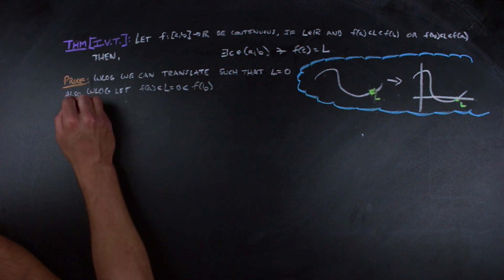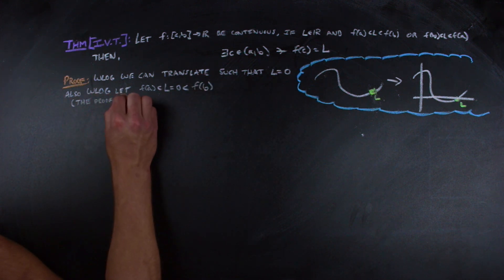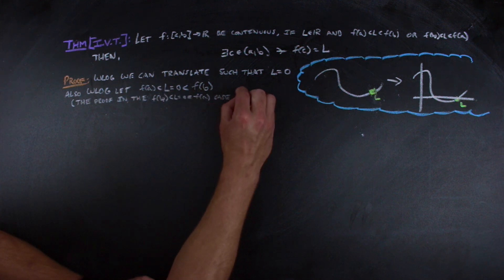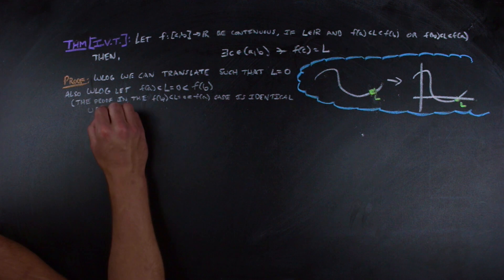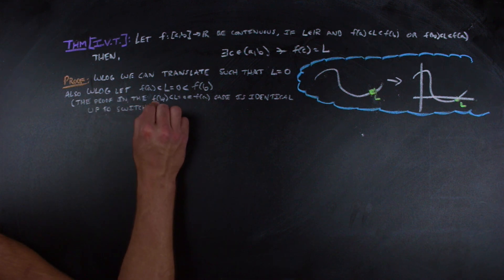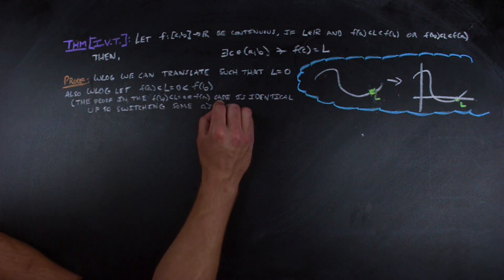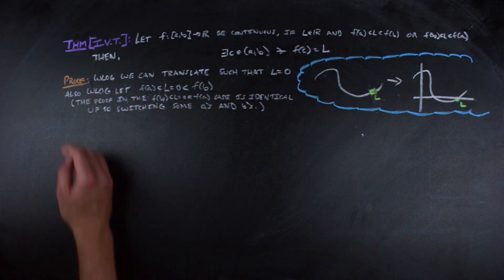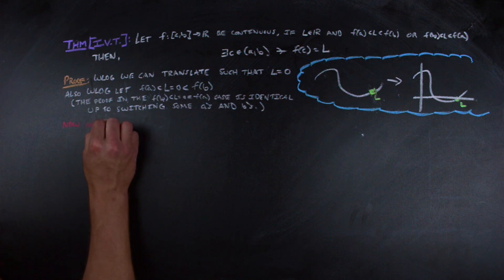The other simplifying move is to recognize that both cases of l being between the images of a and b will have identical arguments, just with some switching of the placements of a and b. So again, without loss of generality, we can consider the case where the image of a is less than l, which is equal to 0, which is less than the image of b. Now we can go ahead and start actually doing some work towards the proof.